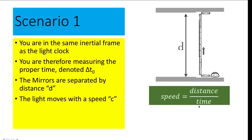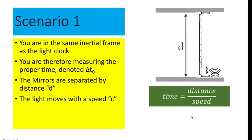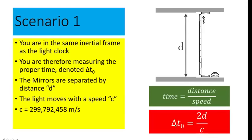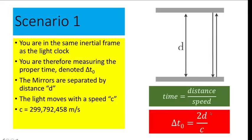Remember that speed equals distance over time, so equivalently we can solve for time as distance over speed. Using this formula, we can measure proper time as the distance the light travels back and forth — one going up and one going down — so the distance traveled is 2d, divided by the speed of light c. This is our formula for proper time in the first scenario: proper time equals 2d divided by c. Remember this, as we will return to it later.